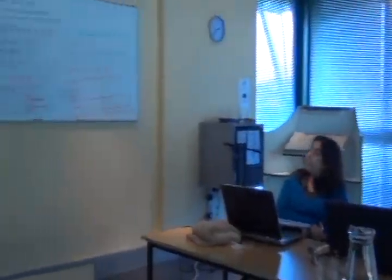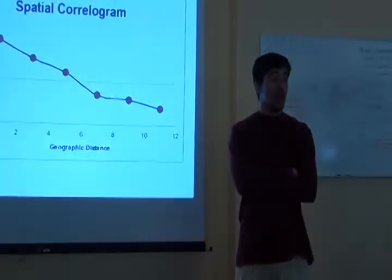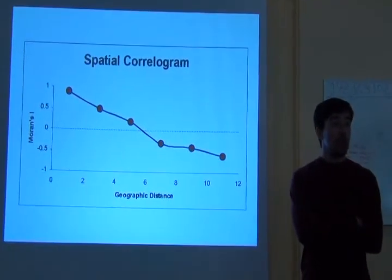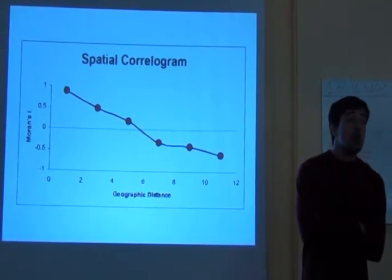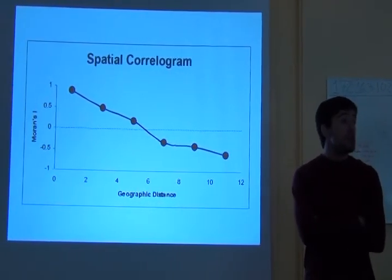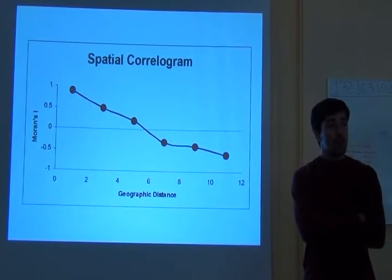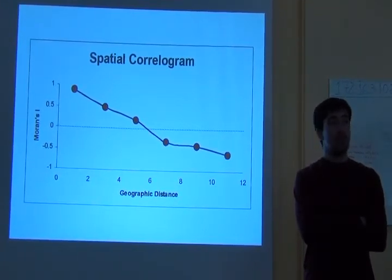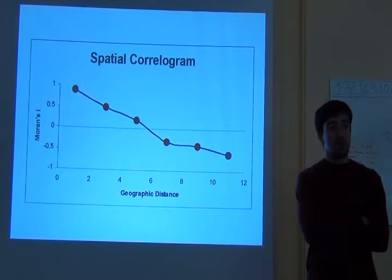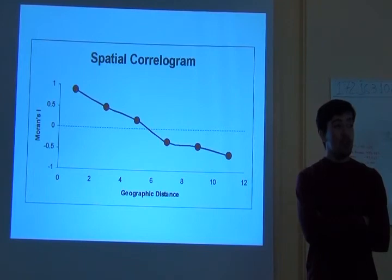That's the distance of independence — the distance at which you cannot tell anything about a pair of sites. Now imagine someone gives you money to do a survey. How are you going to space your sampling sites? This is exactly what the distance of independence tells you — it informs how you should design your sampling strategy.